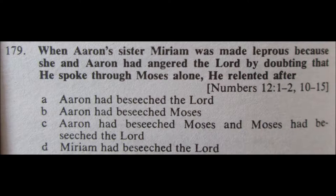This is a good one. I think that D is a pretty good answer — Miriam had beseeched the Lord; she was the one made leprous. C, Aaron had beseeched Moses and Moses had beseeched the Lord — that one might be good too, I'm not sure. I'm going to go with C: Aaron had beseeched Moses and Moses had beseeched the Lord. 179, C.